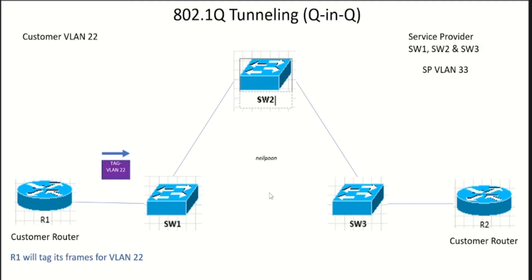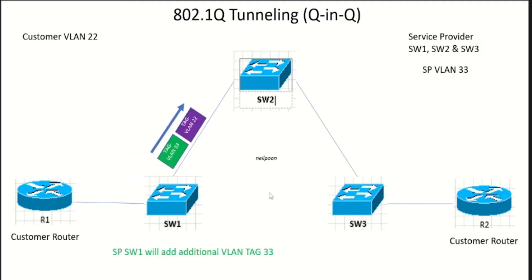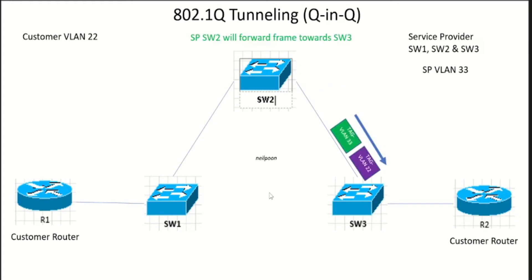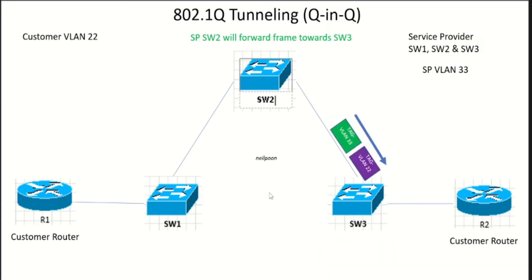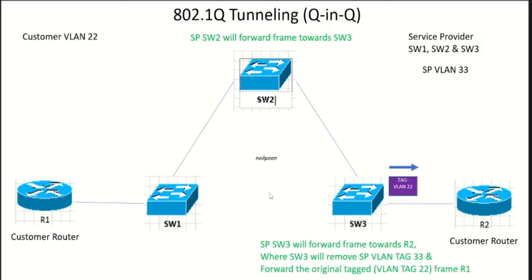As you can see, the tagged VLAN frame from Router 1 is moving towards Switch 1. As soon as it reaches the service provider Switch 1, Switch 1 will add an additional second VLAN tag, which is 33. After that, Switch 1 moves the frame towards Switch 2, Switch 2 moves it towards Switch 3. Switch 3 will then forward the frame towards Router 2. Before it does that, it's going to pop or remove VLAN tag 33, and the original VLAN tag 22 from Router 1 will be forwarded to Router 2.